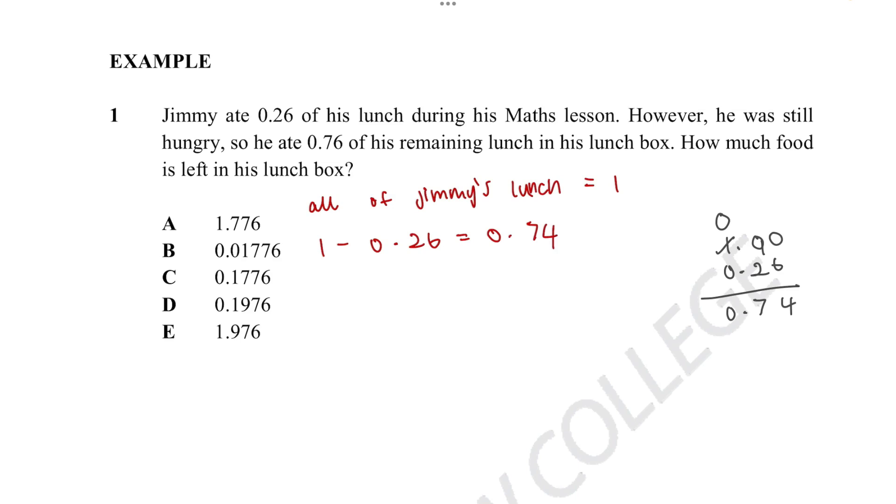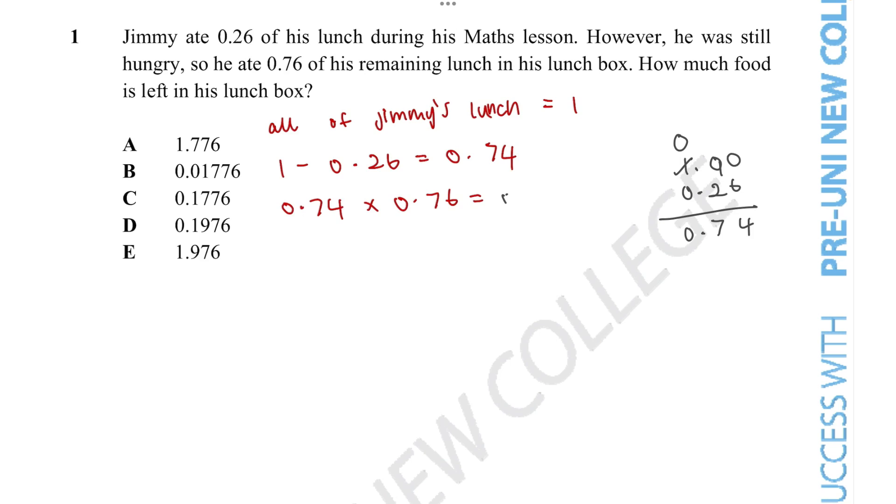Now, however, he was still hungry, so he ate 0.76 of his remaining lunch. So now we need to figure out what he further ate. That would be 0.74 times 0.76. So now we need to multiply 0.74 by 0.76 to find his remaining lunch.